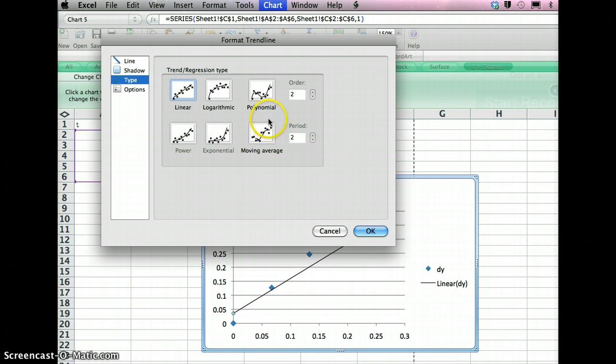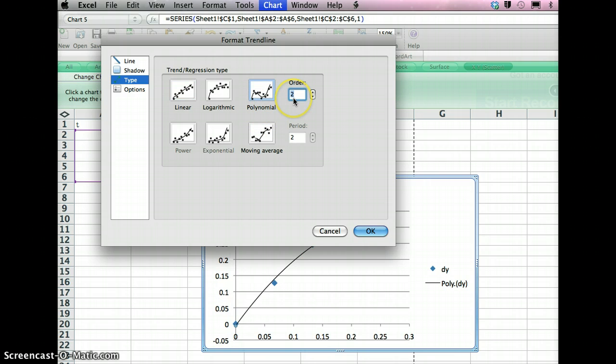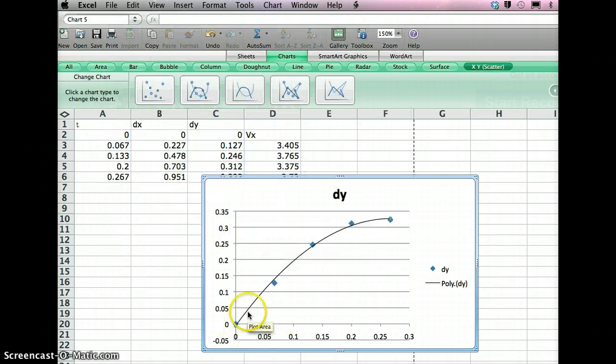In my case, it's going to be a parabola. So I choose polynomial with order equals 2. Then you click OK. You can see a nice trend line or best fit line is done.